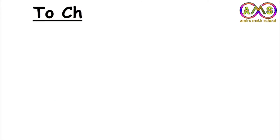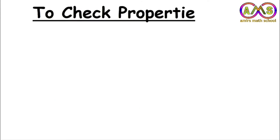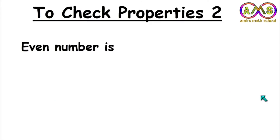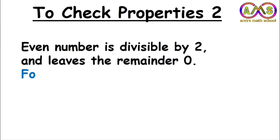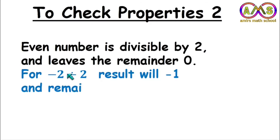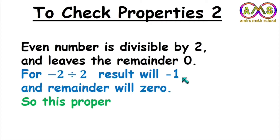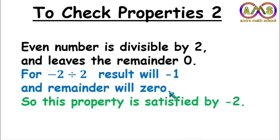Let's see Property 2. An even number is divisible by 2 and leaves a remainder of 0. For minus 2 divided by 2, the result will be minus 1 and the remainder will be 0. So this property of even number is satisfied by minus 2.